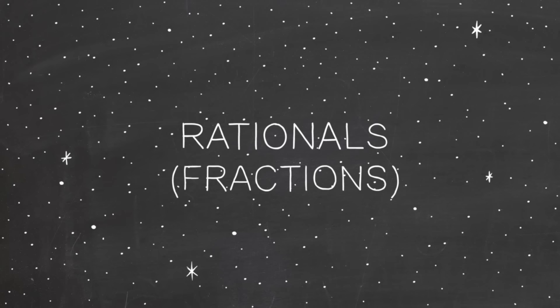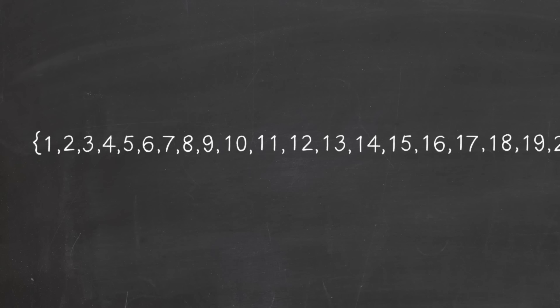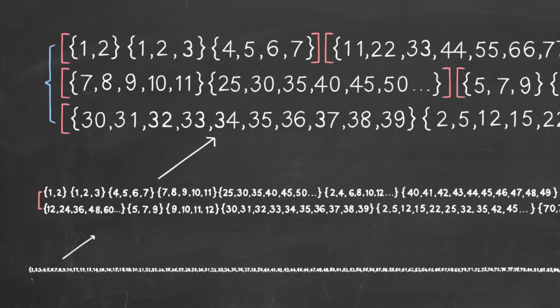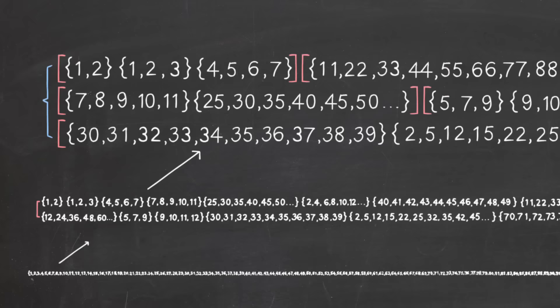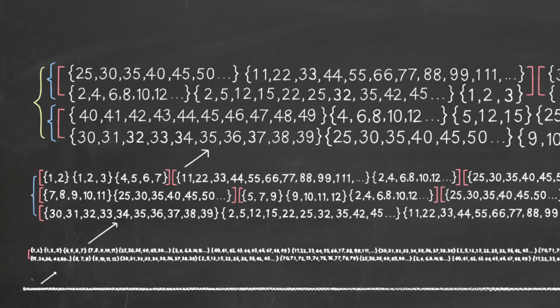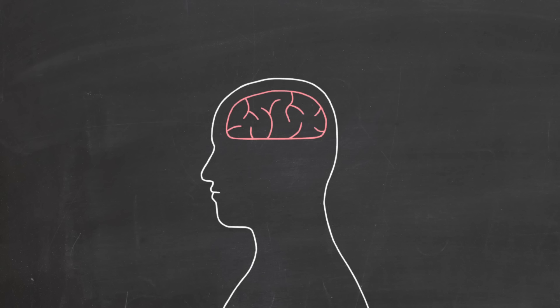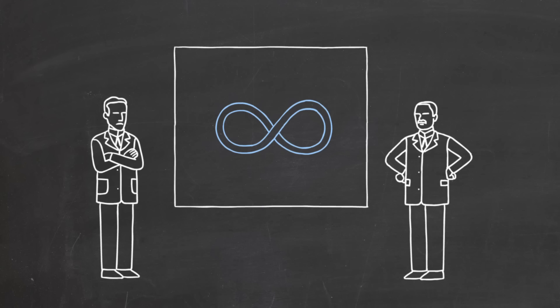Someone once said that the rationals, the fractions, are like the stars in the night sky. The irrationals are like the blackness. Cantor also showed that for any infinite set, forming a new set made of all the subsets of the original set represents a bigger infinity than that original set. This means that once you have one infinity, you can always make a bigger one by making the set of all subsets of that first set, and then an even bigger one by making the set of all subsets of that one, and so on. And so, there are an infinite number of infinities of different sizes.